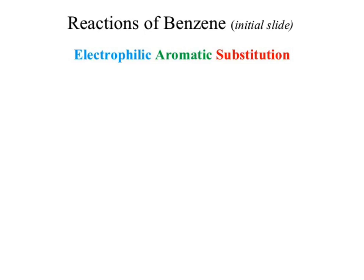What does electrophilic mean to you? An electrophile. So let's come up with a symbol for an electrophile — E plus. Next part: aromatic. What does that mean? A benzene ring. And then substitution.